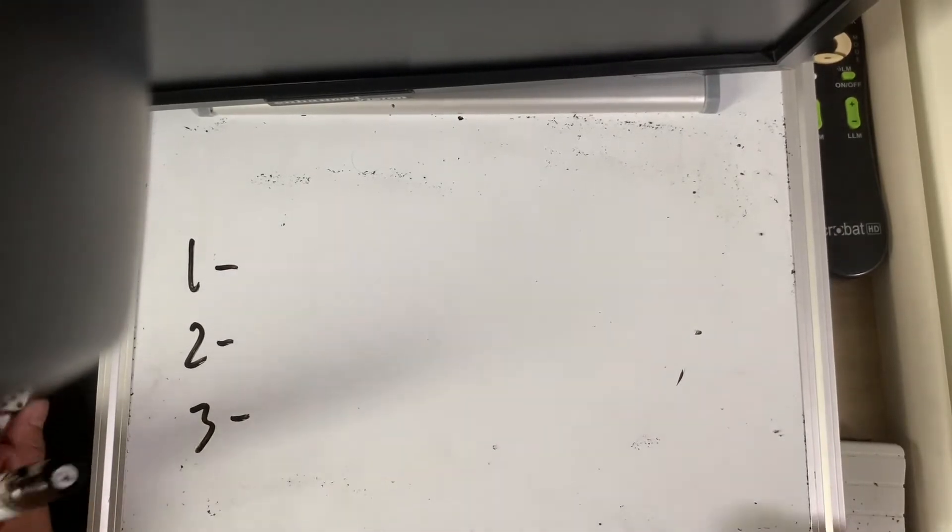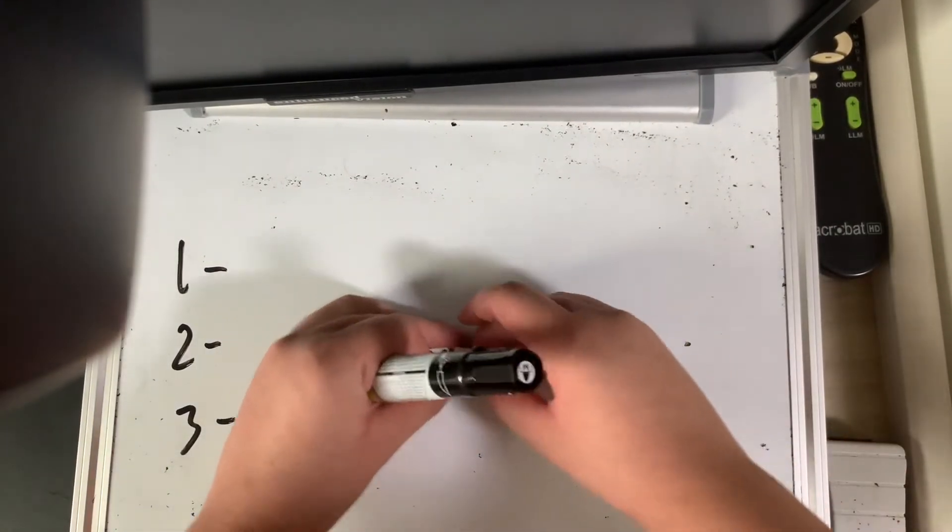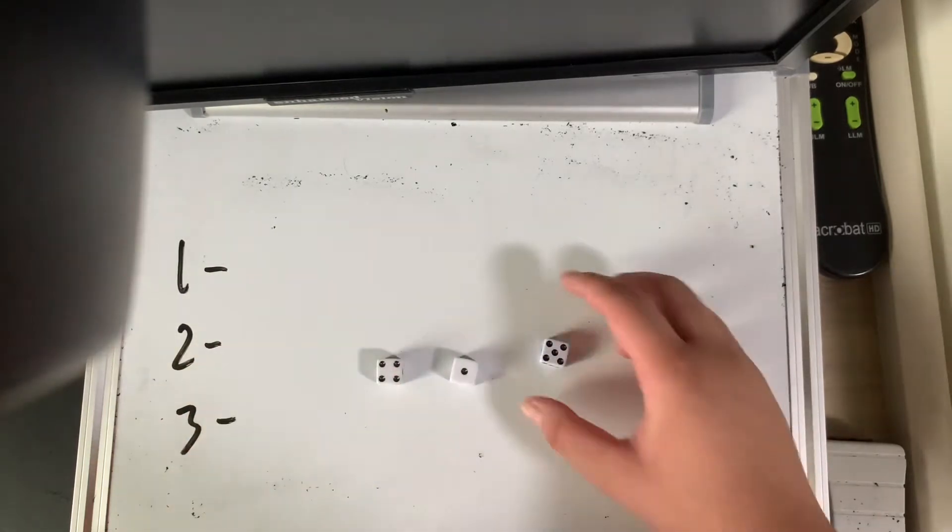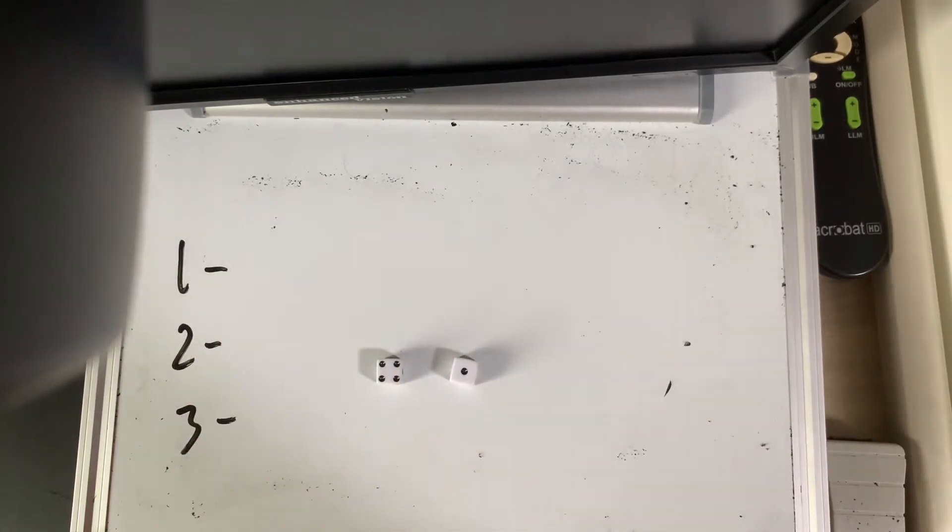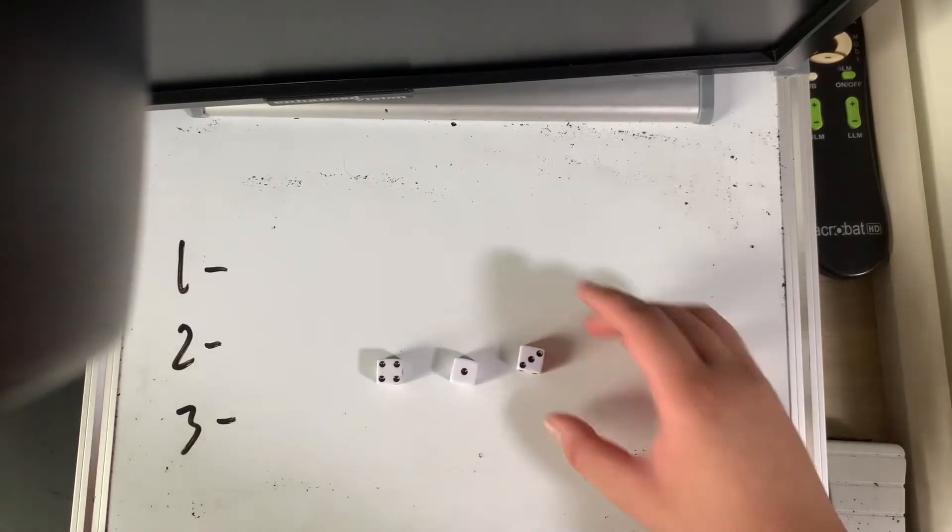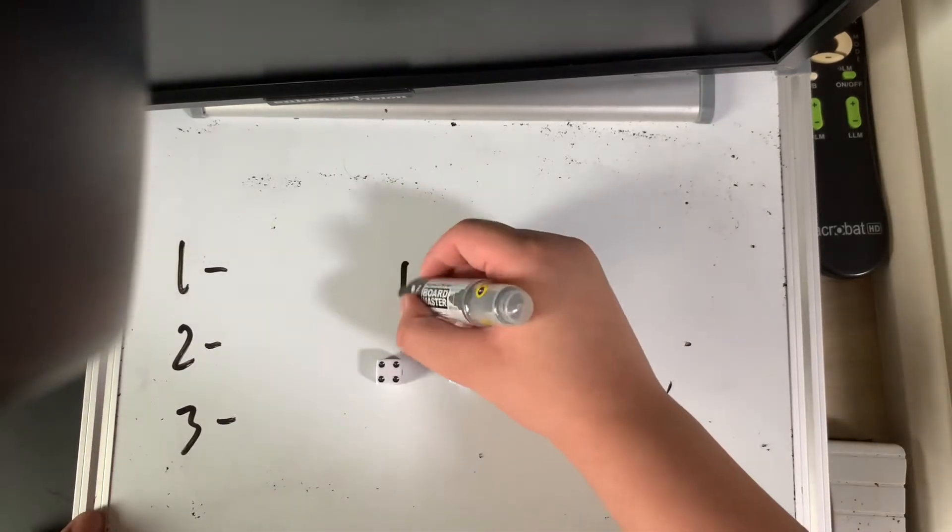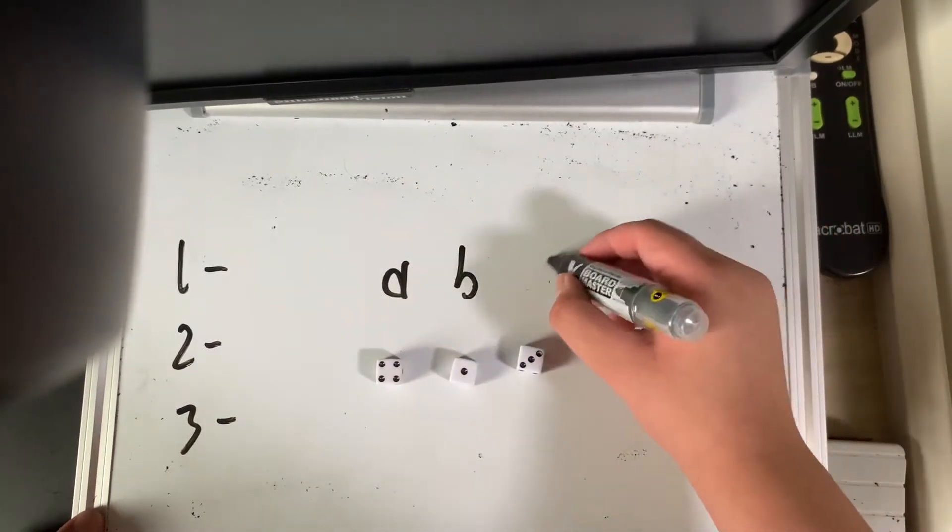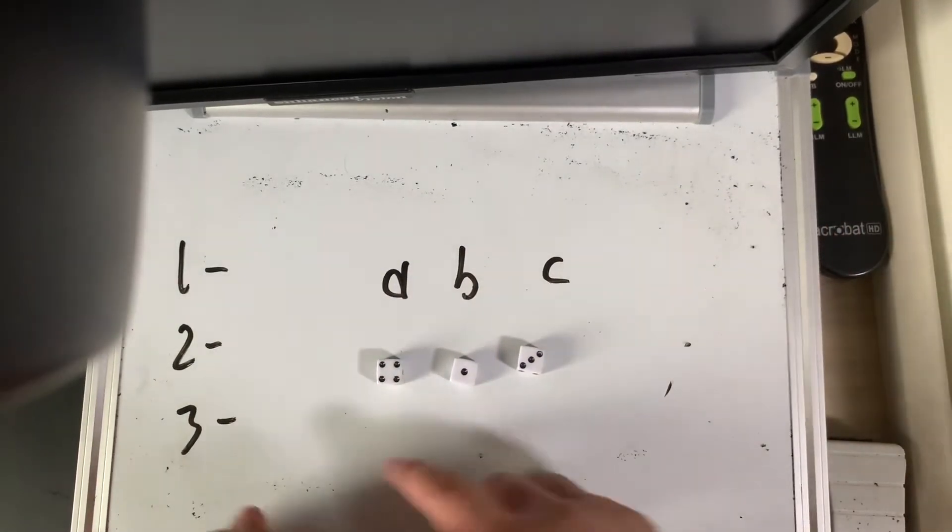So the first step was that, first thing I'm going to do, I'm just going to label the dice. Originally this was 3 right, this was 3 originally. I'm going to call this one dice A, I'm going to call this one dice B, I'm going to call this dice C. And the first step was to sum up all the numbers.